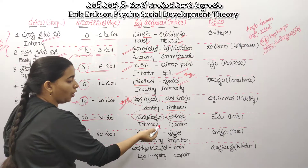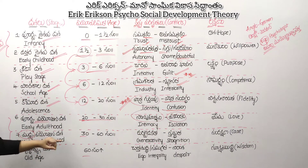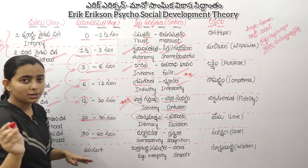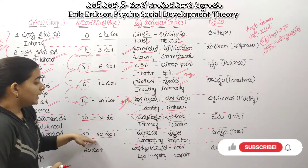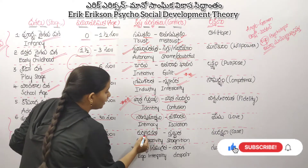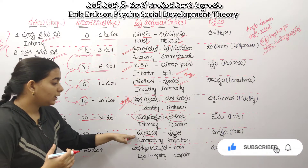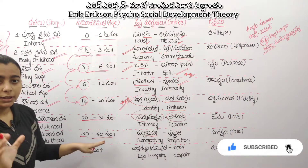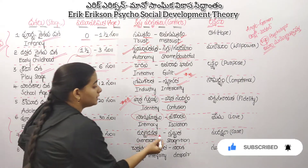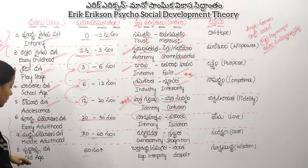Next is Intimacy vs. Isolation — Madhya Vayna Dasam. This age leads to family life. If you look at family life, it is the key focus of this stage — you have to take a look at relationships.